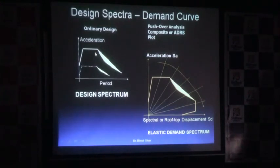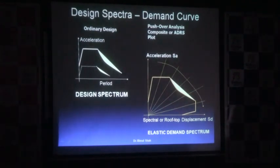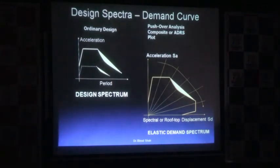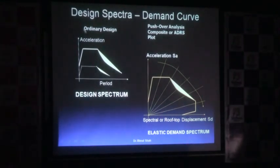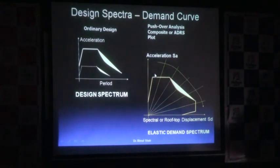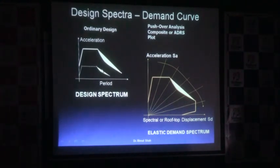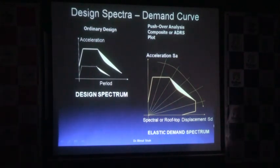What will happen is that the initial demand curve gets reduced. The capacity curve was in the form of force versus deformation, while the demand curve was in the form of time period versus acceleration. This particular demand curve has to be converted into what we call the ADRS format — that is Acceleration Displacement Response Spectrum — where acceleration (spectral acceleration SA) is plotted versus spectral displacement SD. Whatever was represented by the time period on the horizontal axis is now converted in this format.